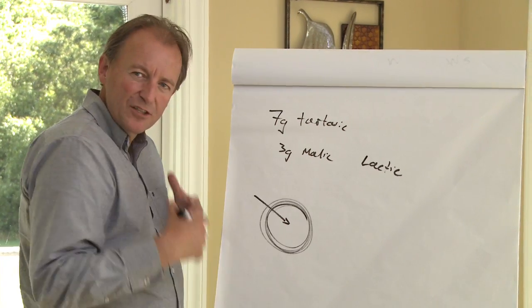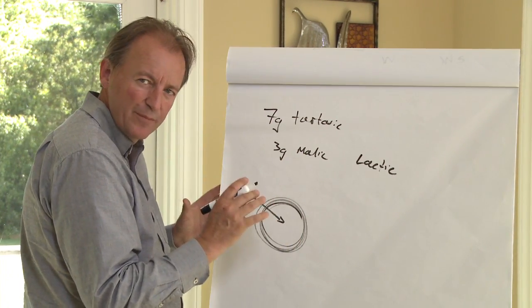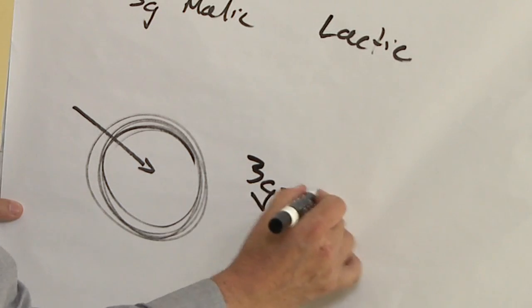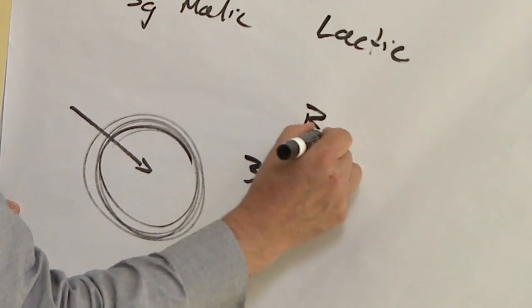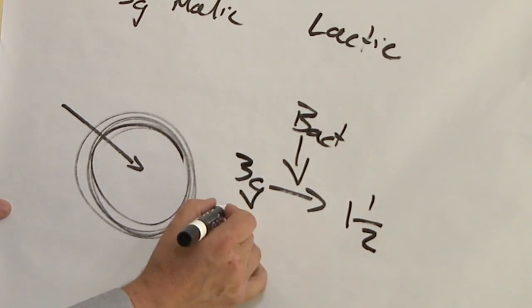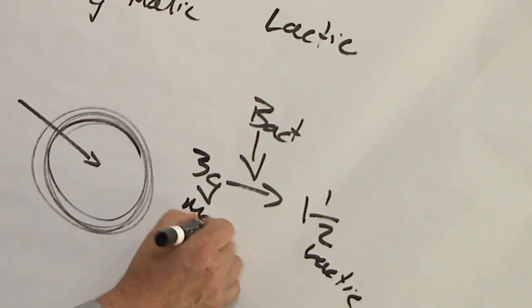Lactic acid is produced during this process, and there's two things to remember with malic acid. If we start with three grams, we add the bacteria, we get one and a half grams of lactic. This is lactic, and this is malic. So it's a half reaction.